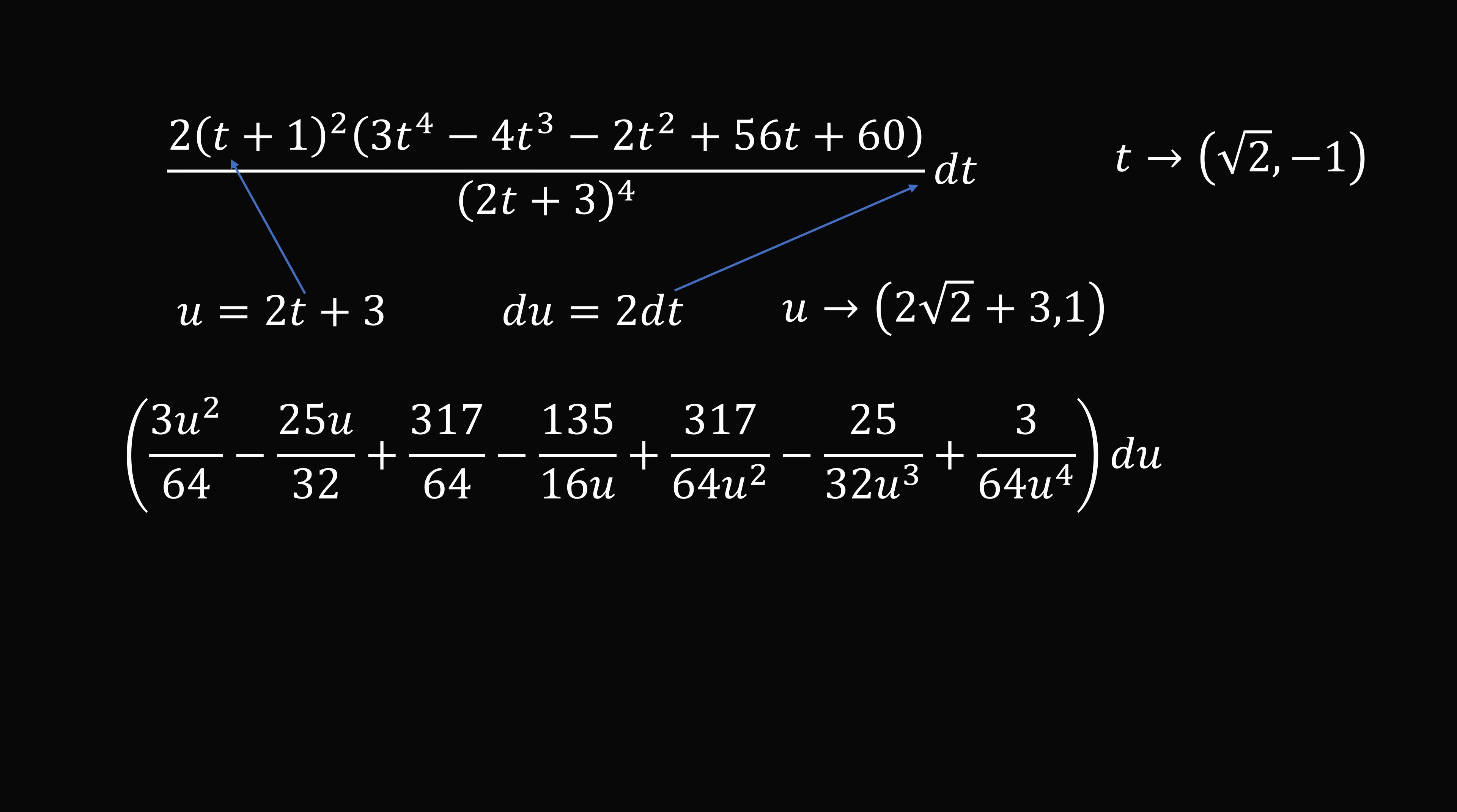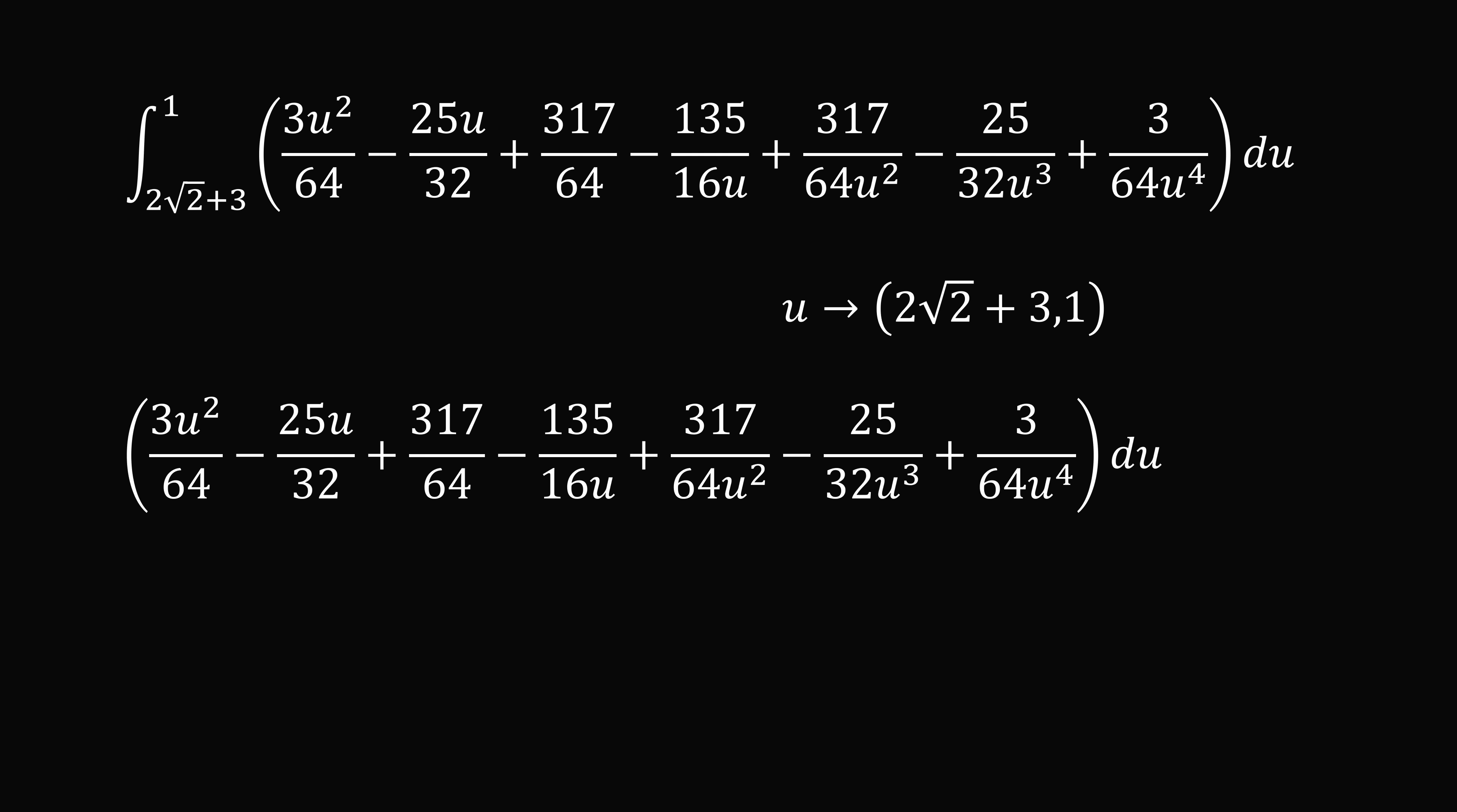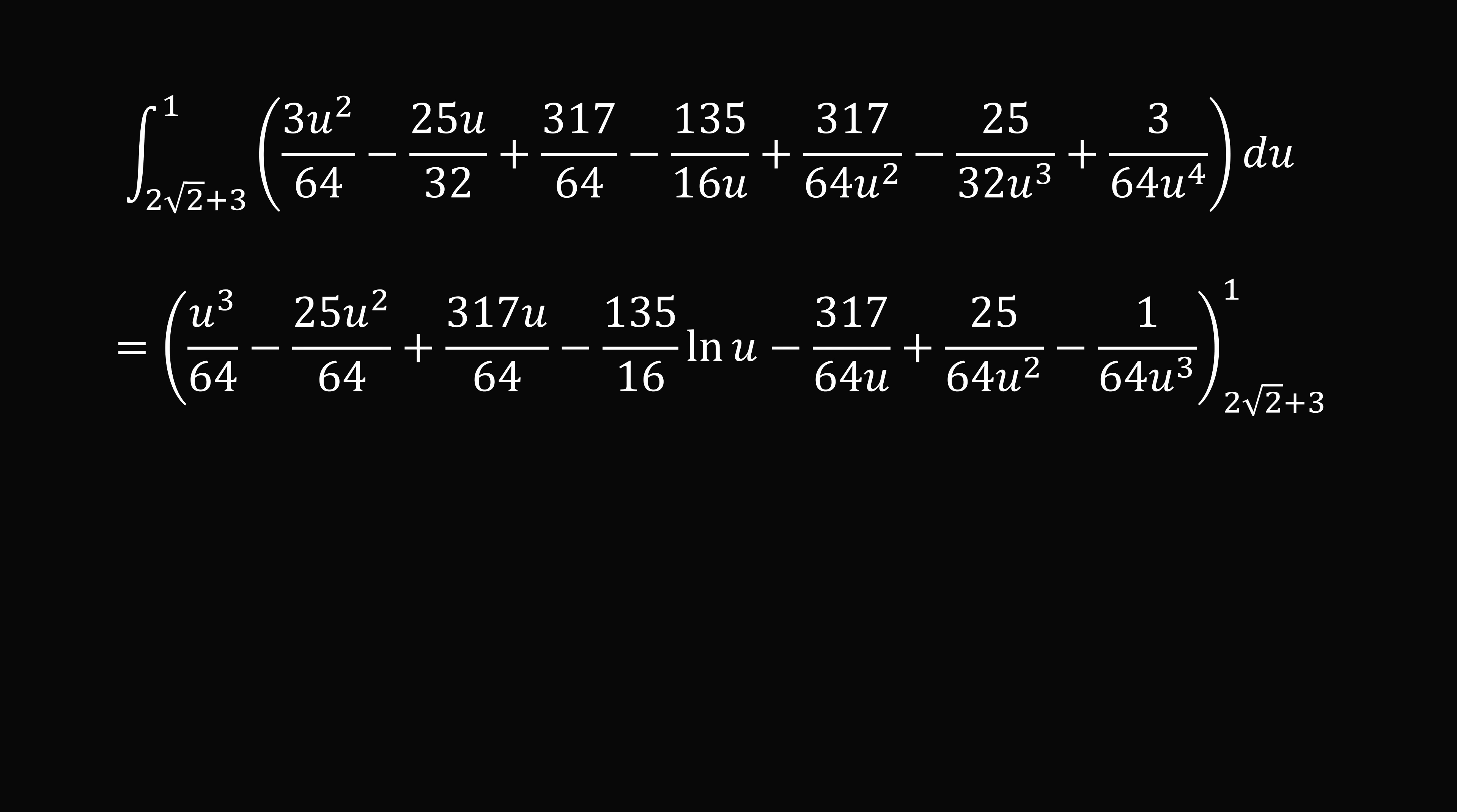This is going to be something that we can calculate the integral of very easily. We want this integral with the limits of integration going from 2 root 2 plus 3 to 1. So now we have a completely manageable integral. Any student from calculus should be able to solve this integral. Go ahead and take the antiderivative term by term and then evaluate this integral from the limits. Just substitute in and simplify and you end up with 135 over 16 multiplied by the natural log of 2 root 2 plus 3 minus 101 divided by 4 root 2. And this is approximately equal to negative 2.981.